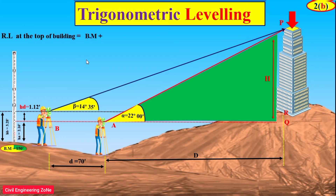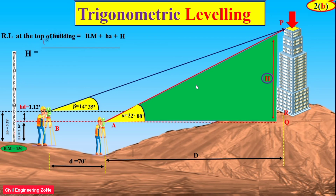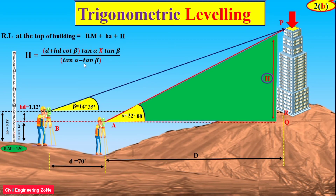To calculate the reduced level of the top of the building, we take the value of benchmark plus the line of collimation of instrument station A plus the value of HD. To calculate H, we use the formula: H = (D + HD) × cot(β) × tan(α) × tan(β), whole divided by tan(α) minus tan(β).